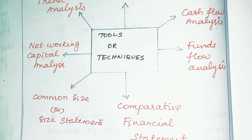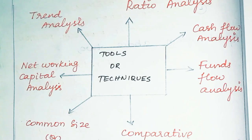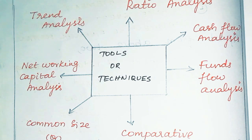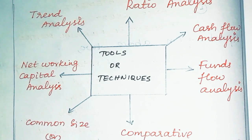Next is net working capital analysis. Working capital is the excess of current assets over current liabilities. By analyzing changes in current assets and current liabilities, we prepare the net working capital analysis. Then there is trend analysis, which is based on a base year. For example, using years 2015, 2016, 2017, and 2018, with 2015 as the base year set to 100, we analyze the trend for subsequent years.